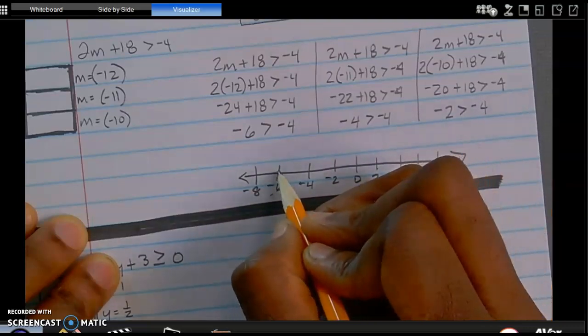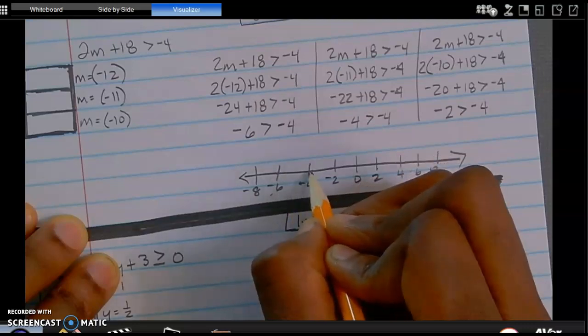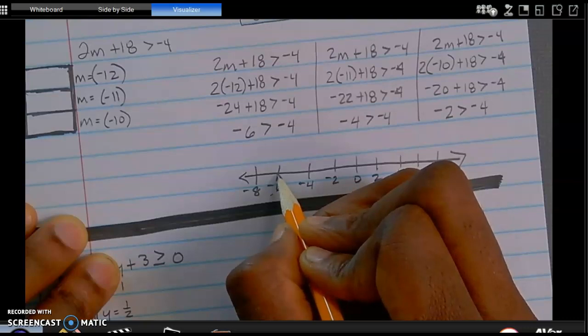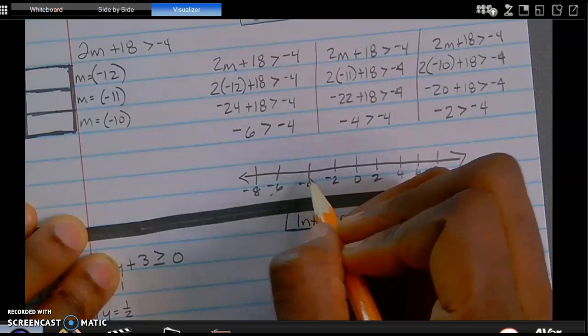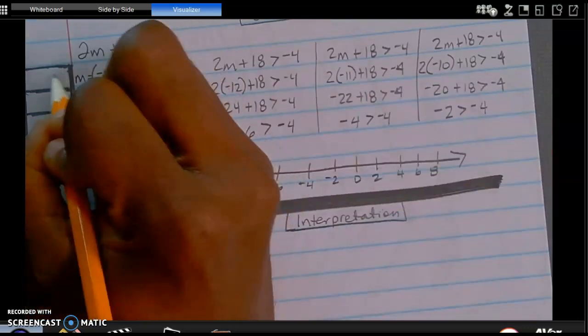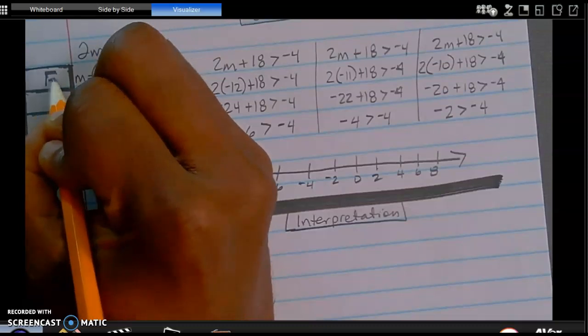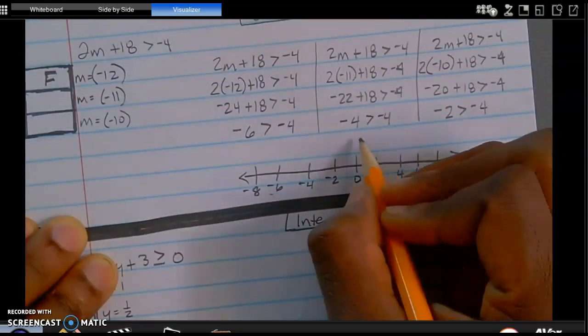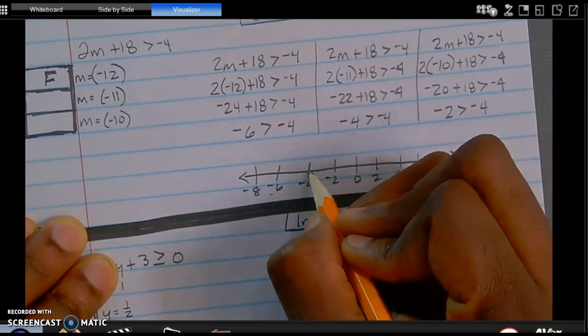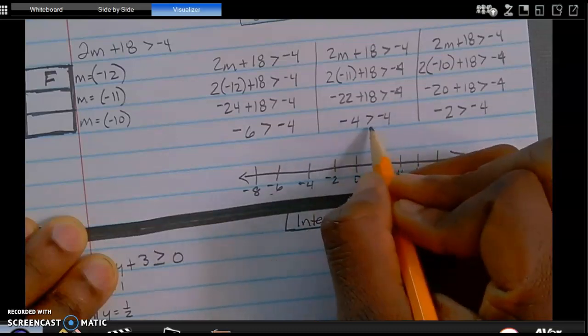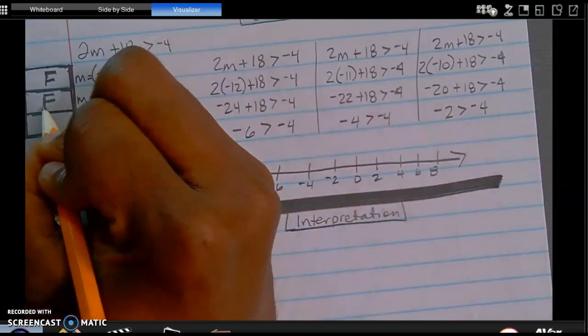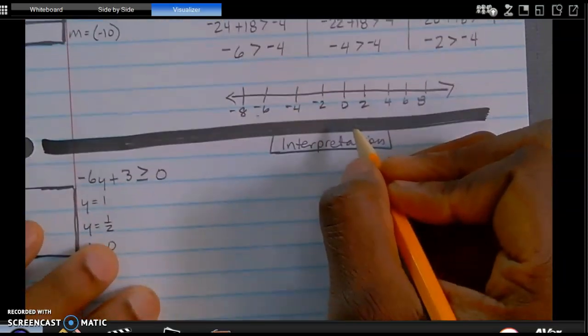So negative 6, is that greater than negative 4? Because negative 6 is to the left of negative 4, that means that no, that is false. So negative 12 is not going to make that correct. What about negative 4? Is that greater than negative 4? Can negative 4 be greater than itself? No. So that one is also false. That does not make that inequality true.